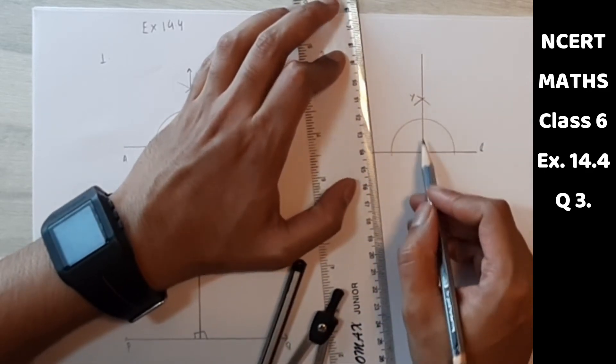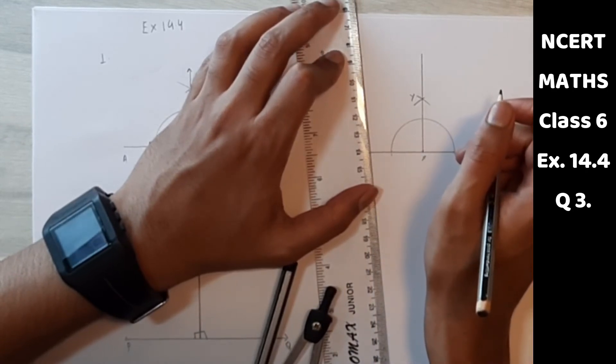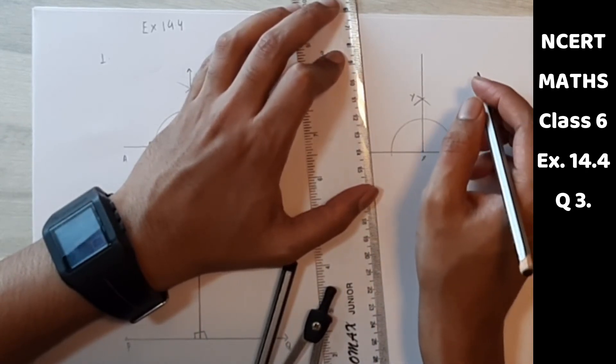So now XY is perpendicular to L. Now we have to make another line segment through Y.